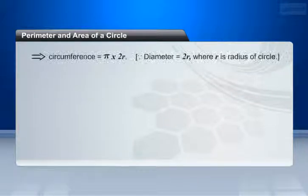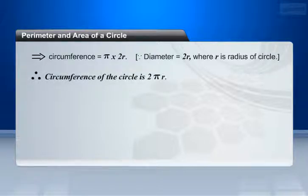We know that diameter equals 2R, where R is radius of circle. Therefore, circumference equals π into 2R. Therefore, circumference of the circle is 2πR. Let us see one example on finding the circumference of circle.